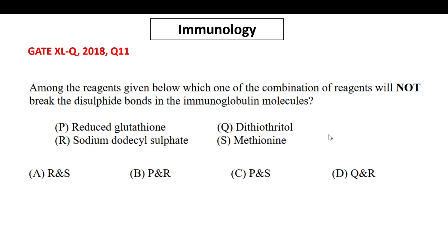The topic here is immunology. The question is from GATE XLQ 2018, question number 11. It is stated as: among the reagents given below, which combination of reagents will not break the disulfide bonds in the immunoglobulin molecules? The four options are: reduced glutathione, dithiothreitol, sodium dodecyl sulfate, and methionine.